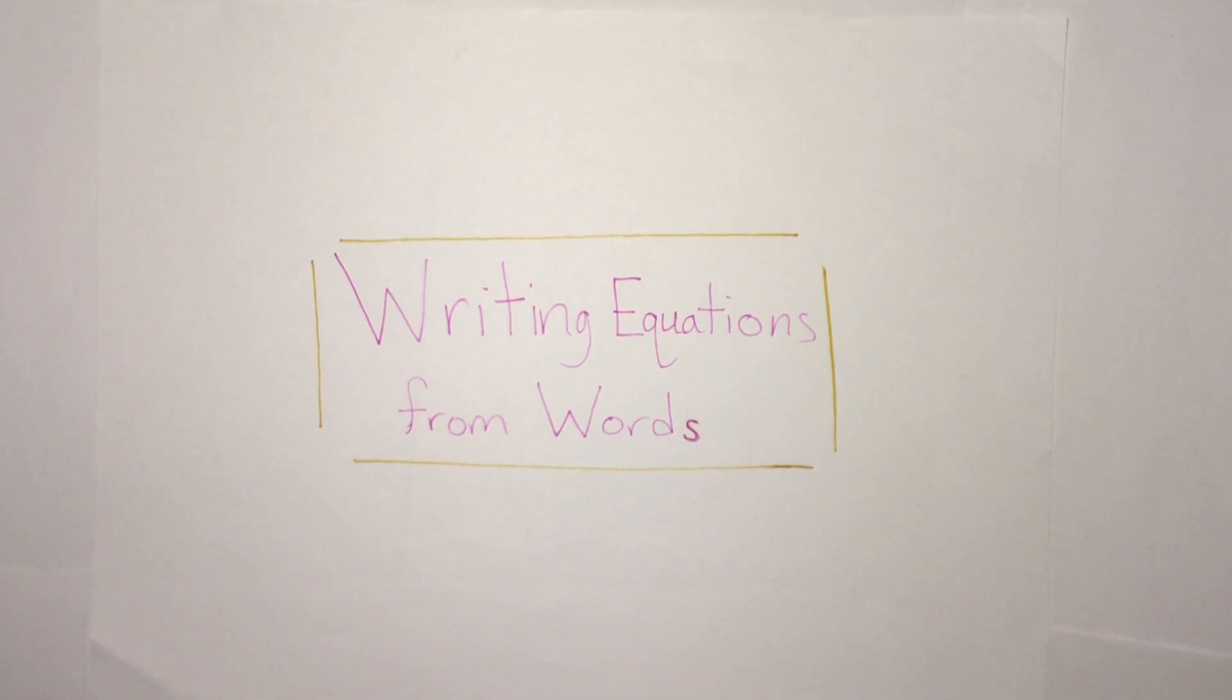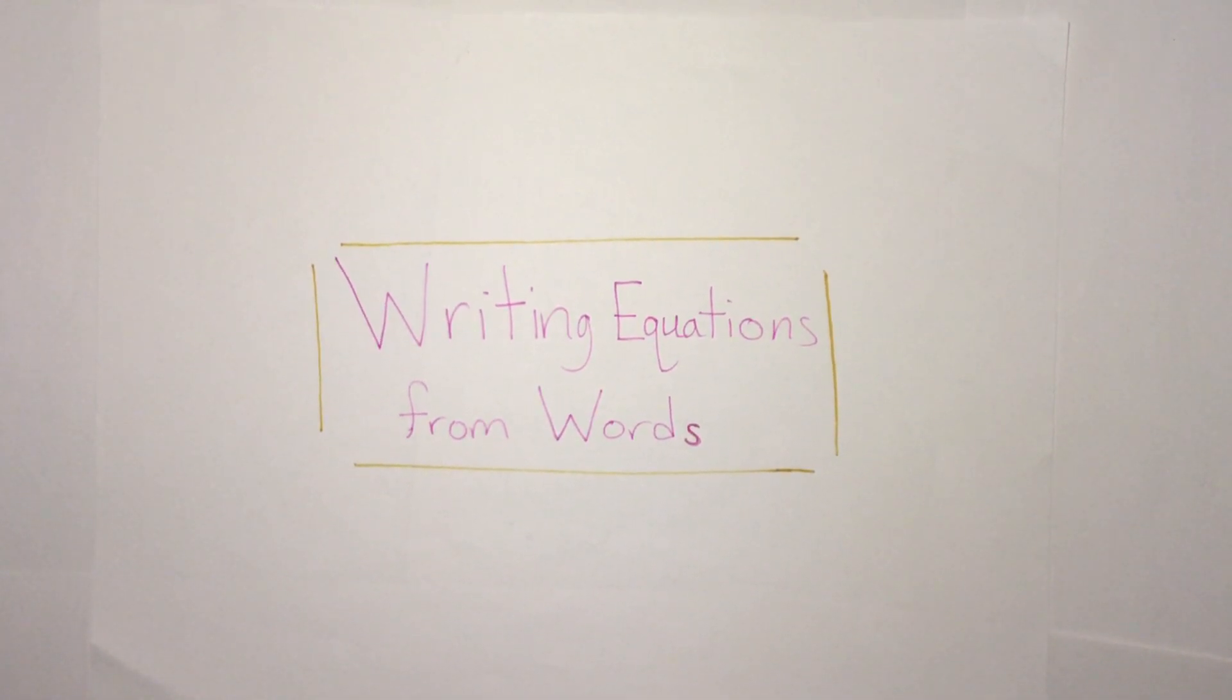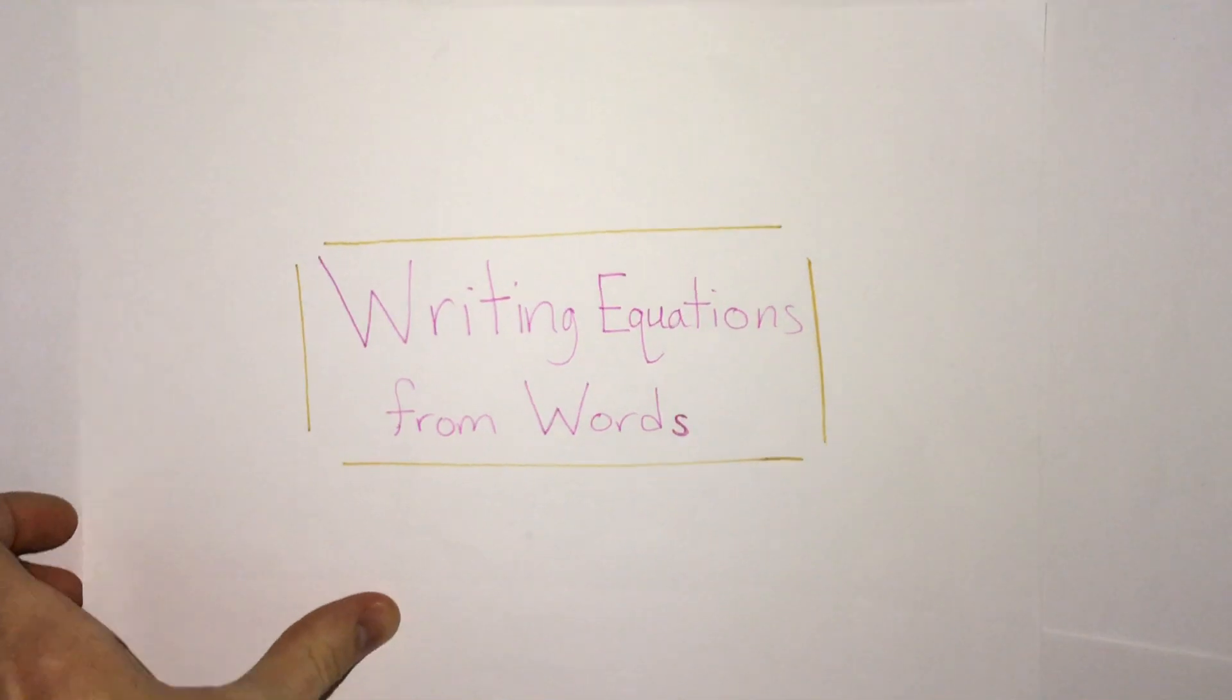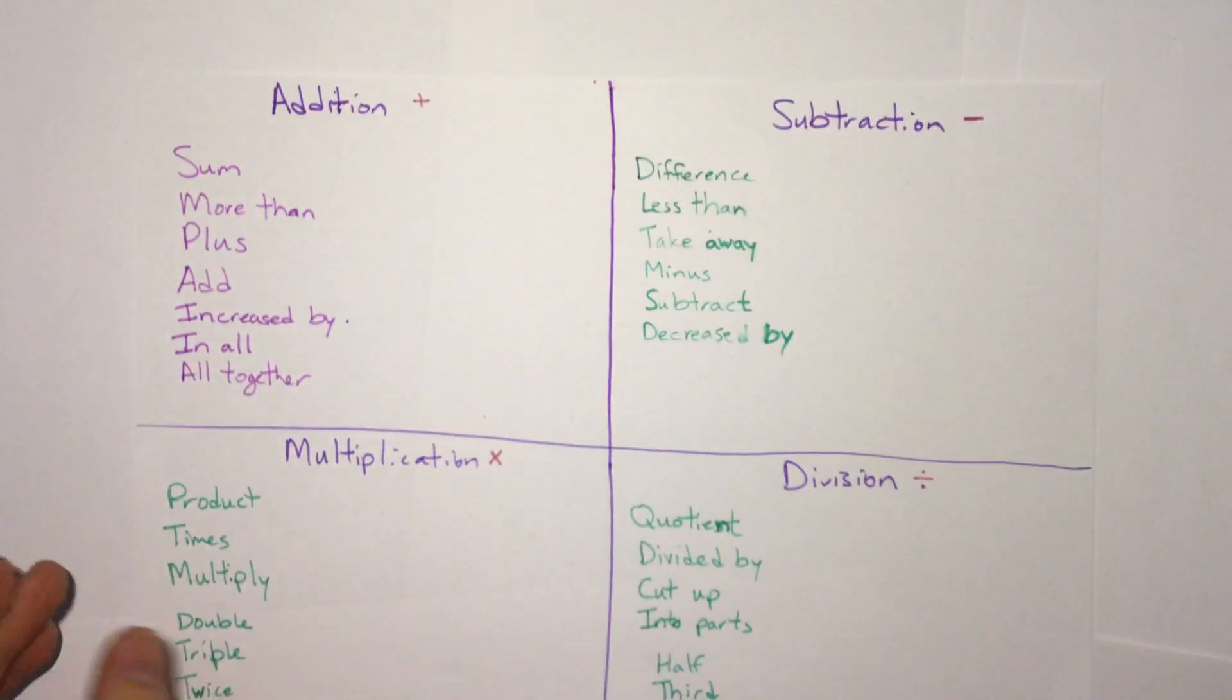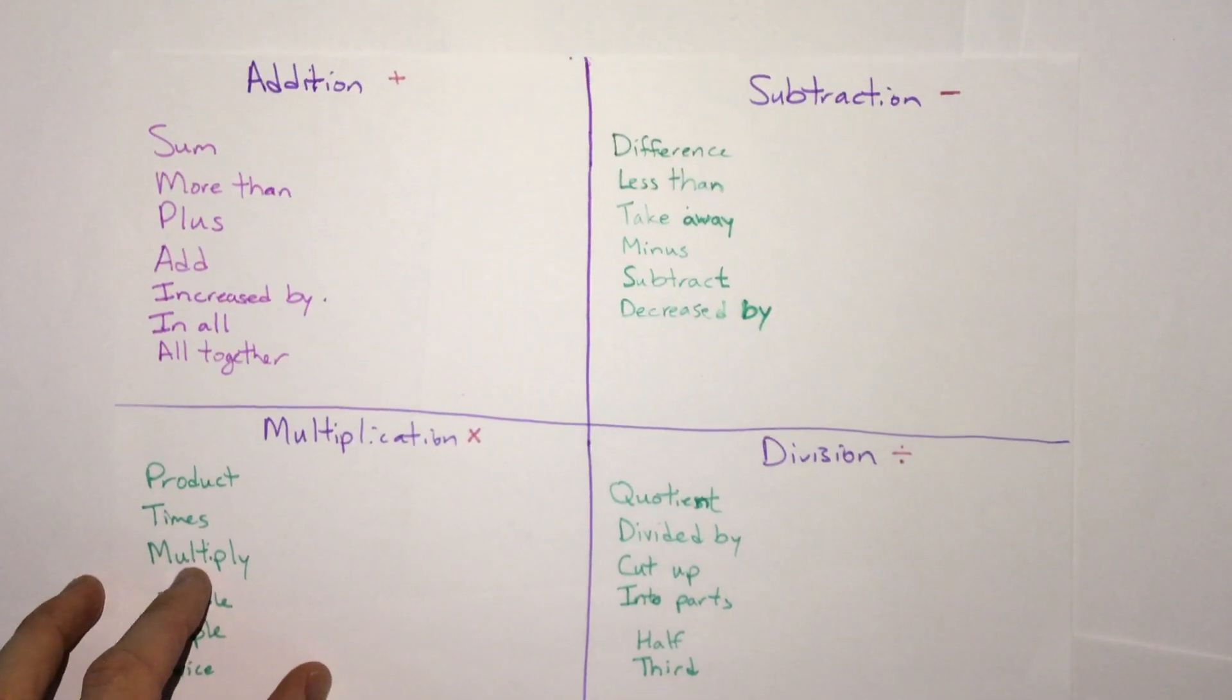In this lesson we'll be looking at taking sentences and writing equations out of word sentences. To do that, what we need to do is know how to interpret what different words mean. We're going to look at some different words that mean addition, subtraction, multiplication, and division.